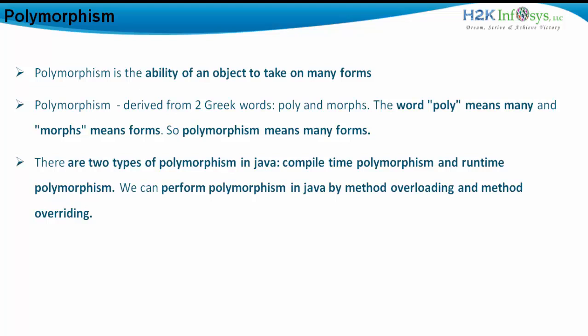We have already seen method overloading. Polymorphism in Java is also achieved by constructor overloading, and another way is through method overriding. Method overriding is achieved at runtime. Method overloading is part of compile time polymorphism, whereas method overriding is an example of runtime polymorphism, also called dynamic polymorphism. We will see method overriding in runtime polymorphism, as we have already covered method overloading in compile time polymorphism.